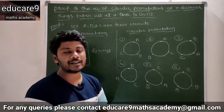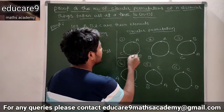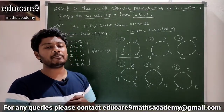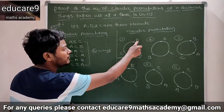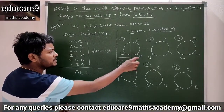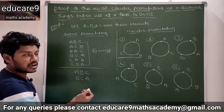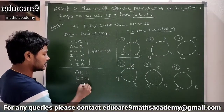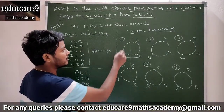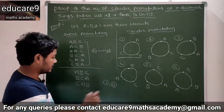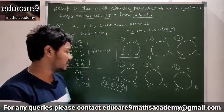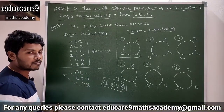There is no starting point in circular permutation. Once you look at the first element A, B, C — you can start from either A, B, or C. If you start with A, the element is A, B, C. If you start with B, the element is B, C, A. If you start with C, the element is C, A, B. So these three linear permutations are identical in circular permutation and are equal to one circular permutation.